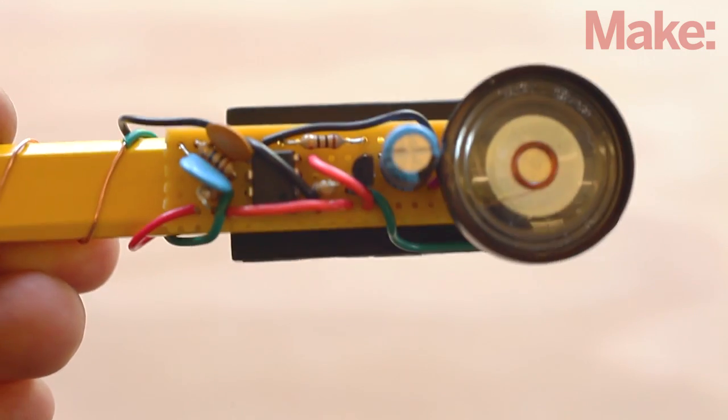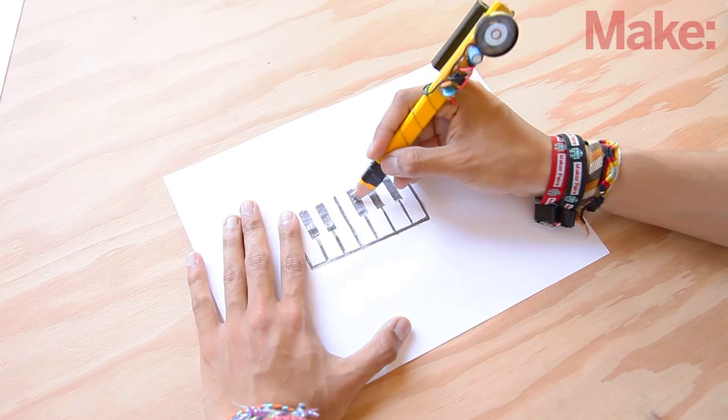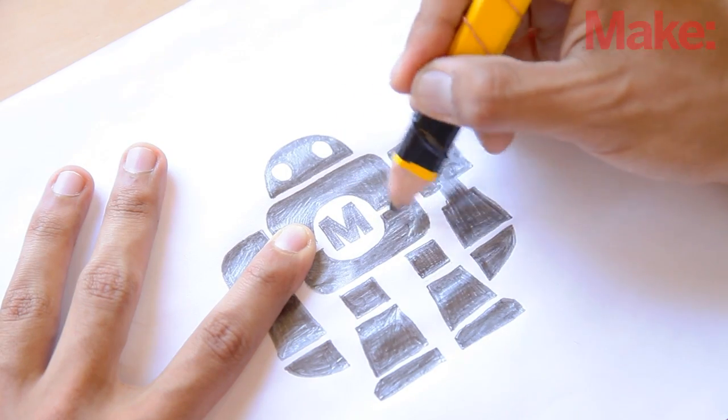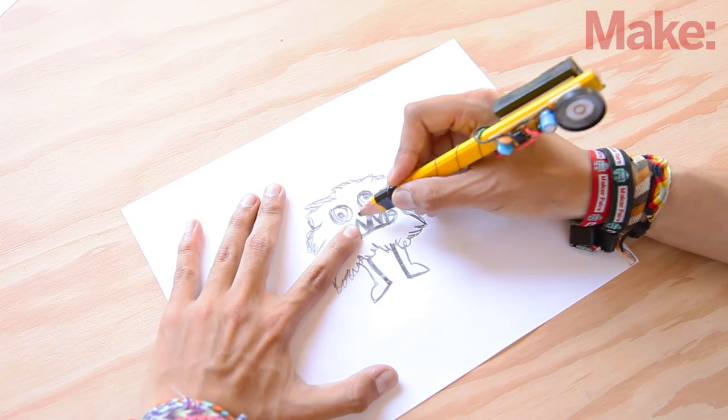When you hold Drawdio in your hand, your body becomes part of the resistive loop, and you can do lots of fun tricks. Draw yourself a piano and play a little tune, or maybe a robot that talks, or even some mini monsters that growl.